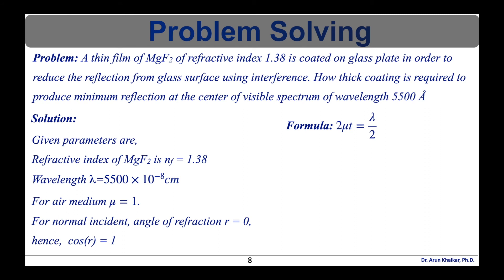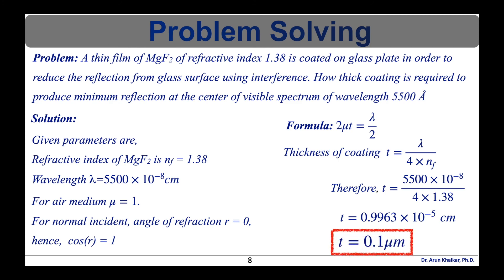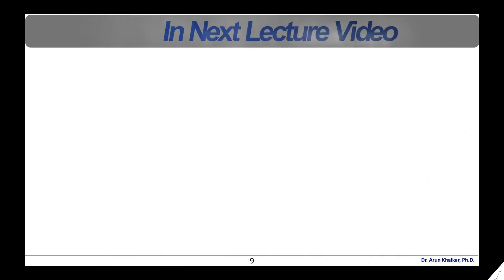So we have formula 2 mu t is equal to lambda by 2. So rearranging this equation as mu for air medium is equal to 1 therefore thickness of coating small t is equal to lambda upon 4 into nf therefore t is equal to 5500 into 10 raised to minus 8 which is the wavelength divided by 4 into the refractive index of the MgF2 that is 1.38 therefore t is equal to 0.9963 into 10 raised to minus 5 centimeter therefore rearranging this value we can write the thickness of the coating t is equal to 0.1 micrometer.